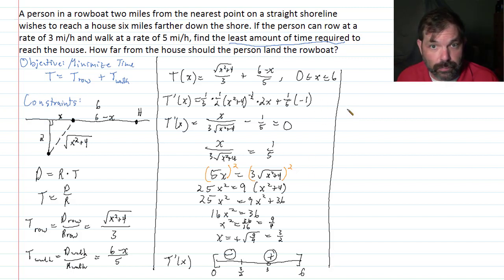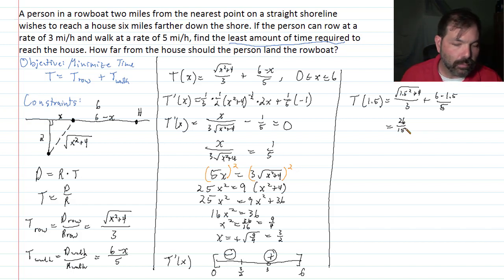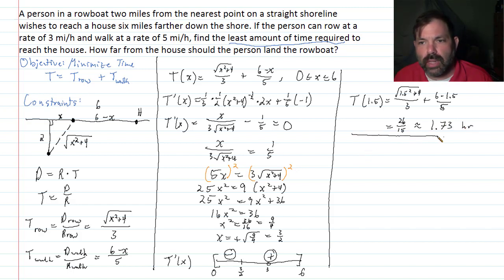So what's our conclusions then? Find the least amount of time required to reach the house. So let's calculate t. It's t of 1.5. t of 1.5 would be the square root of 1.5 squared plus 4 over 3 plus 6 minus 1.5 over 5. And if we go through all of the arithmetic, I did that on the side over here. This works out to be 26 over 15 as an exact fraction. And so that's approximately 1.73 hours. So that's the first part. That's the minimum time.